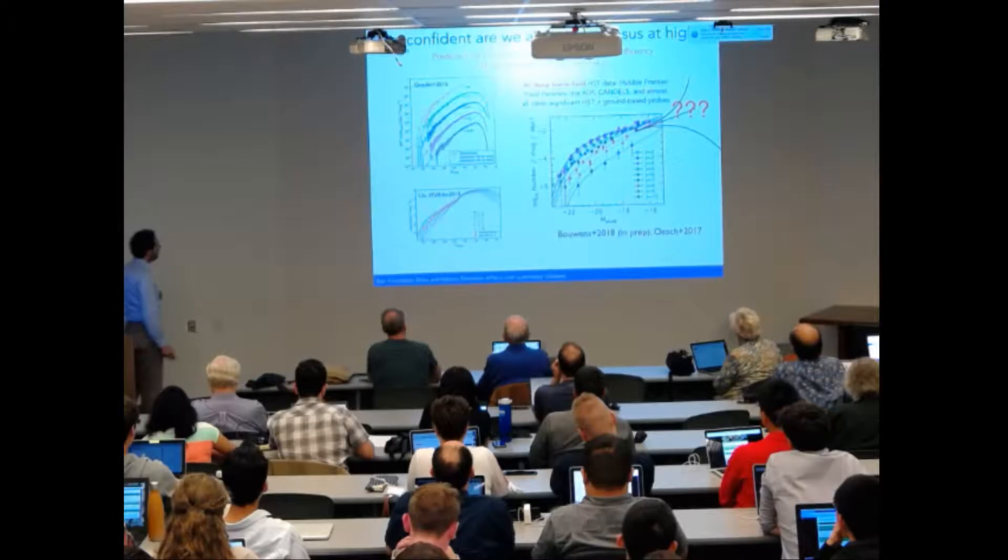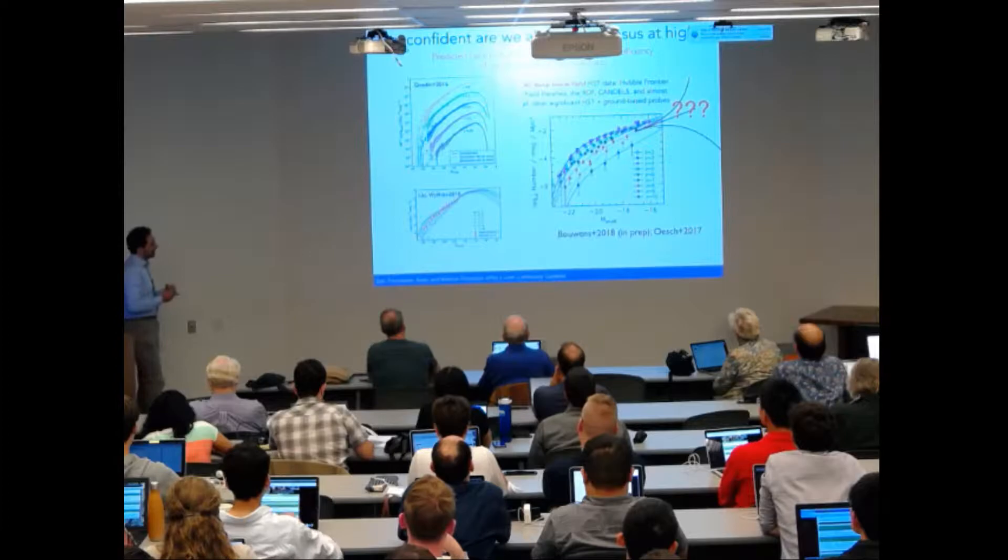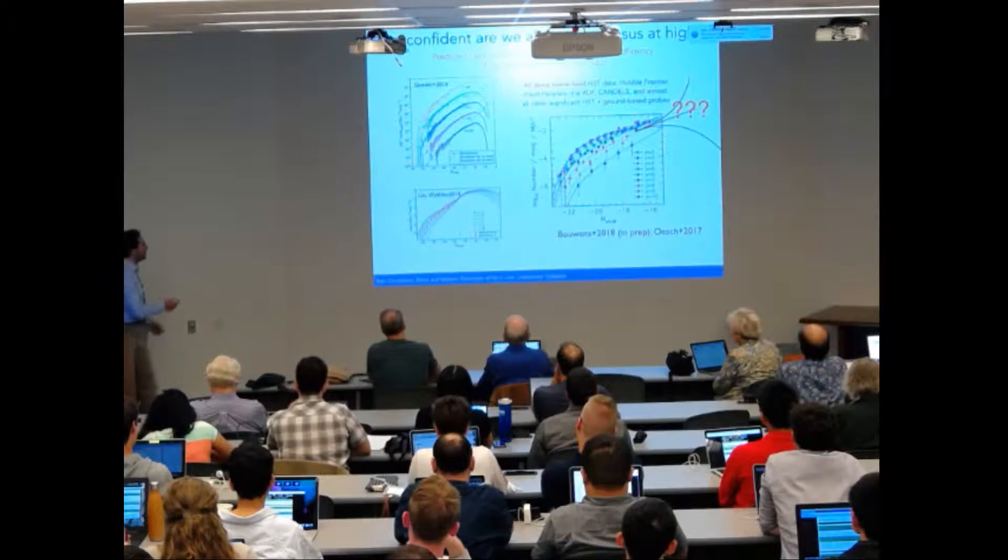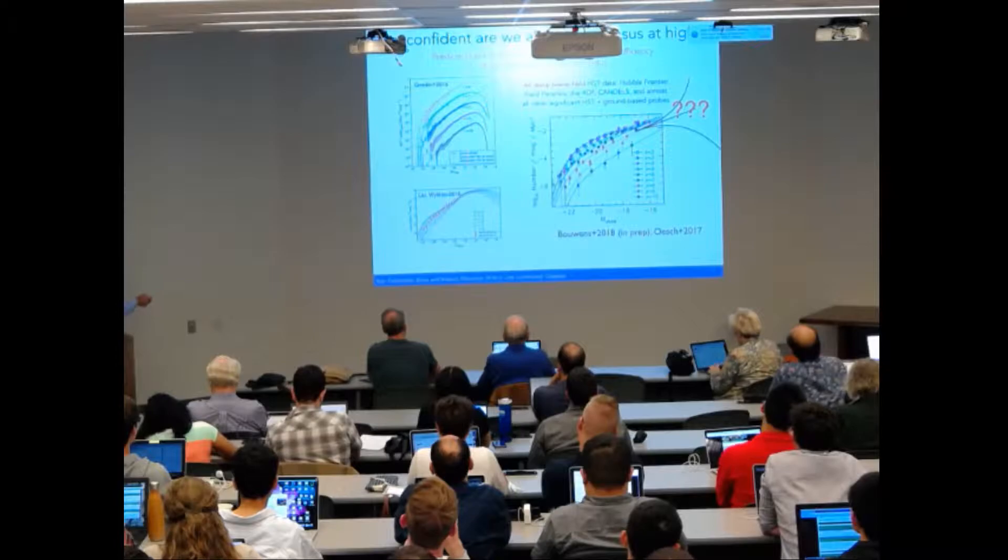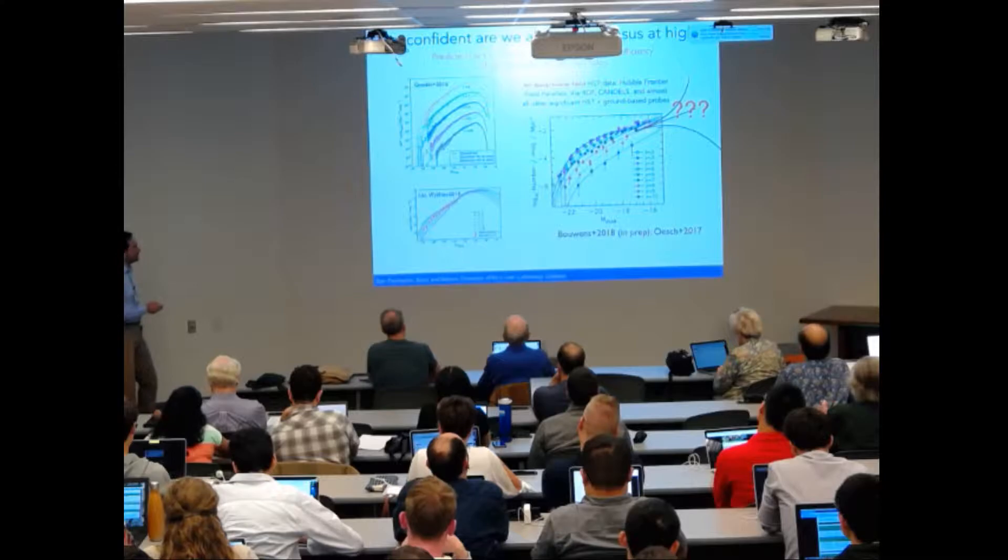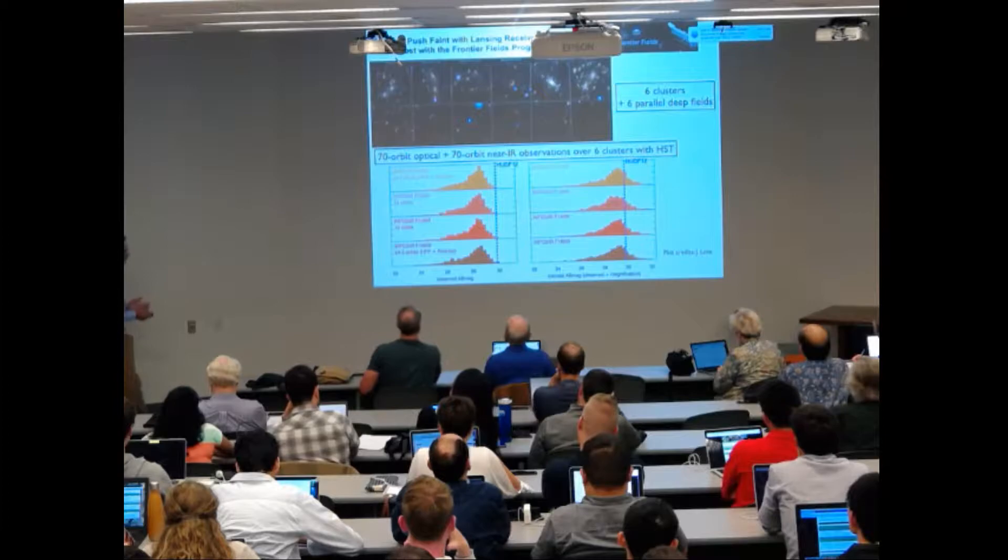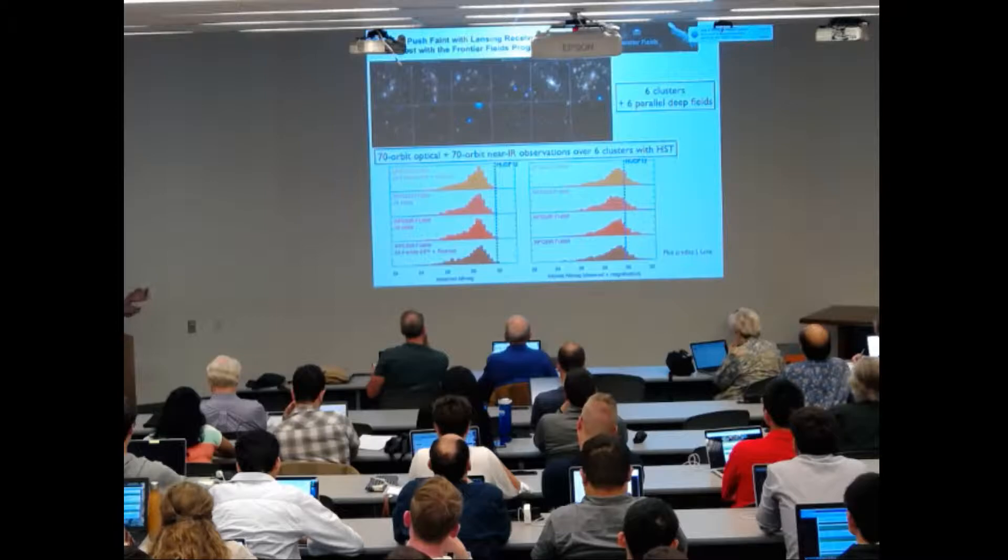My last point: the faint end slope of the UV luminosity function brings information about the star formation efficiency as well, because from models we know that there should be some turnover of the UV luminosity function. But even combining all blank fields from the deepest HST data, we have not yet been able to measure any, to identify any turnover or turn-up of the luminosity function.